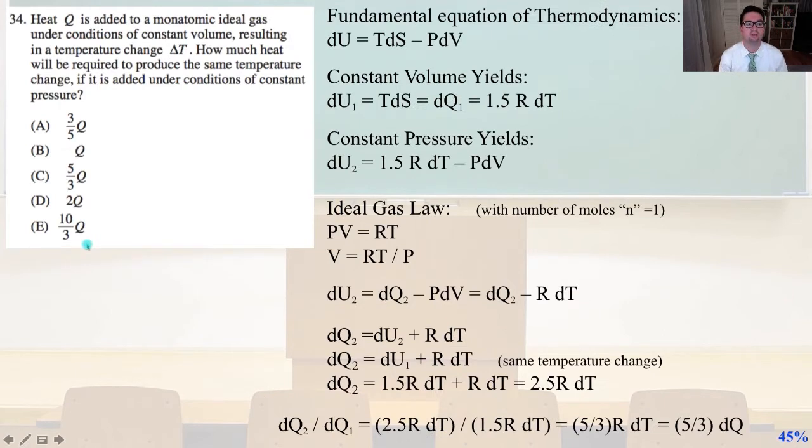Number 34. Heat Q is added to a monatomic ideal gas under conditions of constant volume, resulting in a temperature change of delta T. How much heat will be required to produce the same temperature change if it is added under conditions of constant pressure?